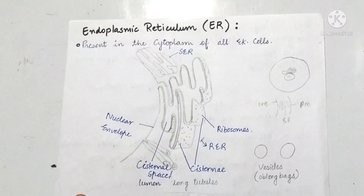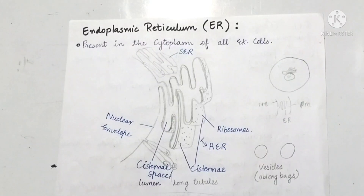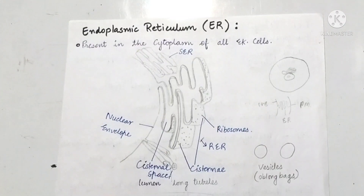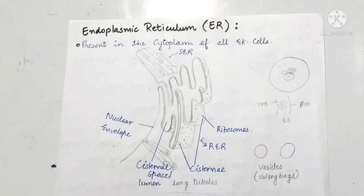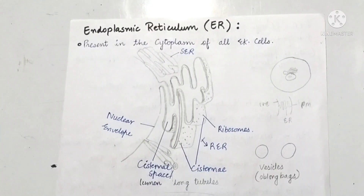First of all, I will give you an outline of endoplasmic reticulum. Endoplasmic reticulum is called ER. There are two types: smooth endoplasmic reticulum and rough endoplasmic reticulum. Smooth endoplasmic reticulum is smooth because ribosomes are not present. Rough endoplasmic reticulum is rough because ribosomes are present, making the texture rough or grainy.